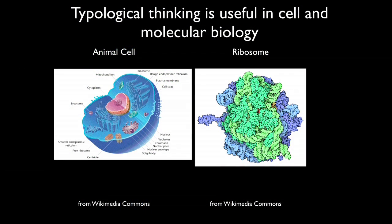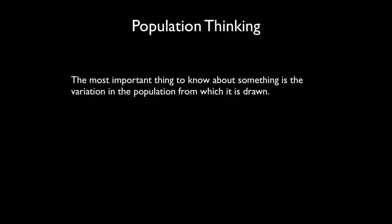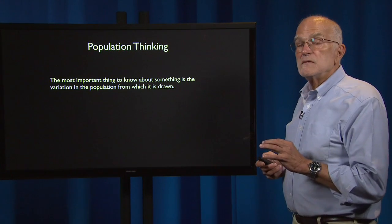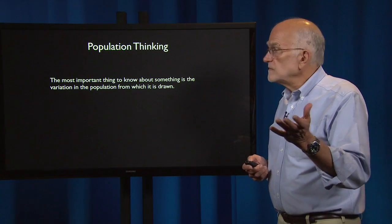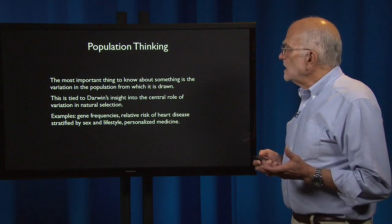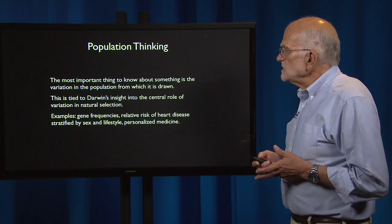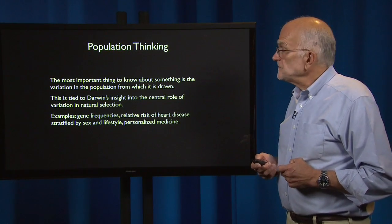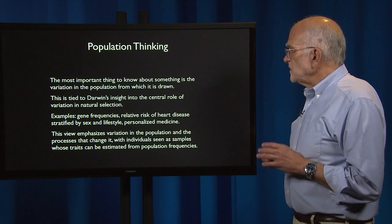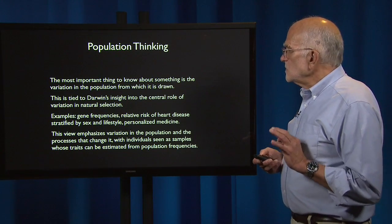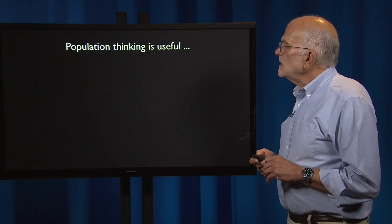That is an example where it probably is a good idea to think typologically. On the other hand, population thinking is the most important type of thinking in evolutionary biology. When doing that, the most important thing to know is the variation in the population from which a trait is drawn — tied to Darwin's insight into the central role of variation in natural selection. Examples include gene frequencies, relative risk of heart disease stratified by sex or lifestyle, and developments leading to personalized medicine.